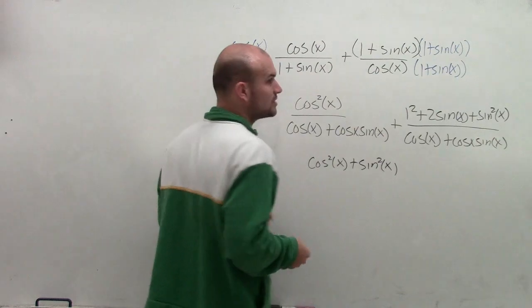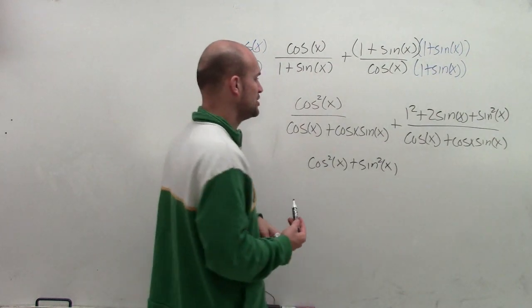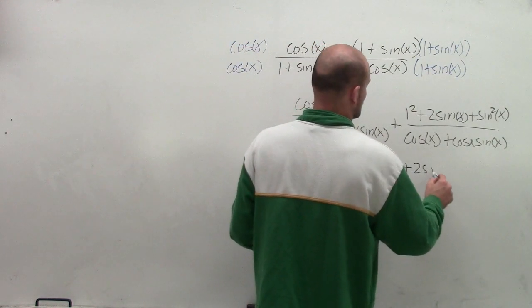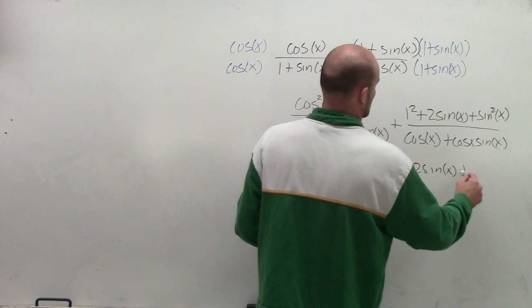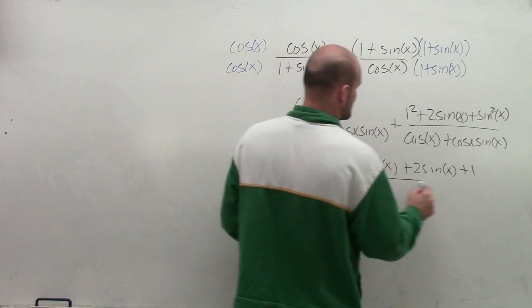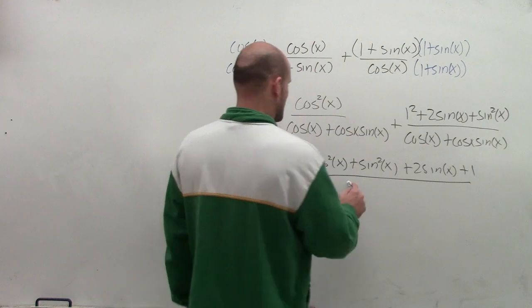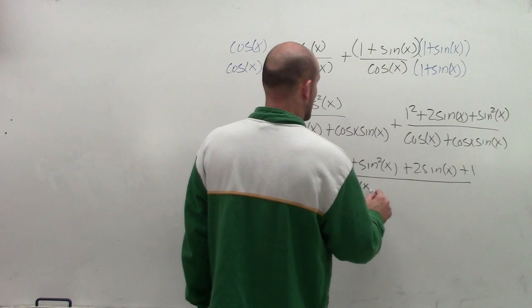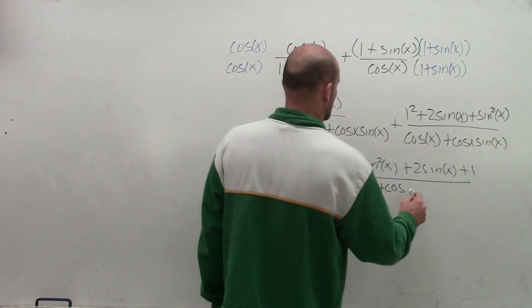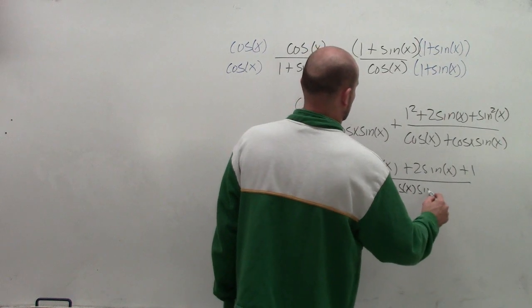Since we all have addition, we can use the commutative property. Plus 2 sine of x plus 1. And this is going to be all divided by cosine of x plus cosine of x sine of x.